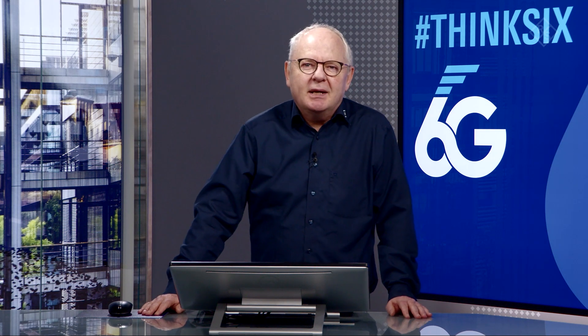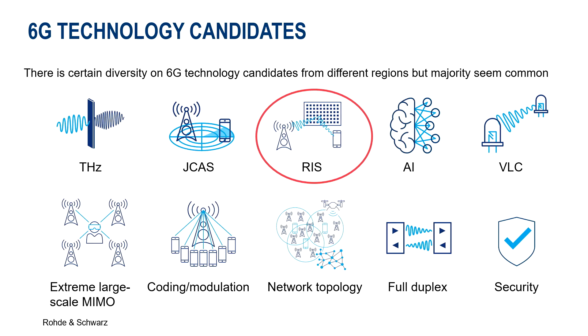Welcome to another R&S THiNK6 video. This time we are going to look into reconfigurable intelligent surfaces, which may allow the programming of the radio propagation environment. Reconfigurable intelligent surfaces are one of the most promising 6G technology candidates, amongst others like sub-Terahertz or Terahertz communications, artificial intelligence, or joint communication and sensing.